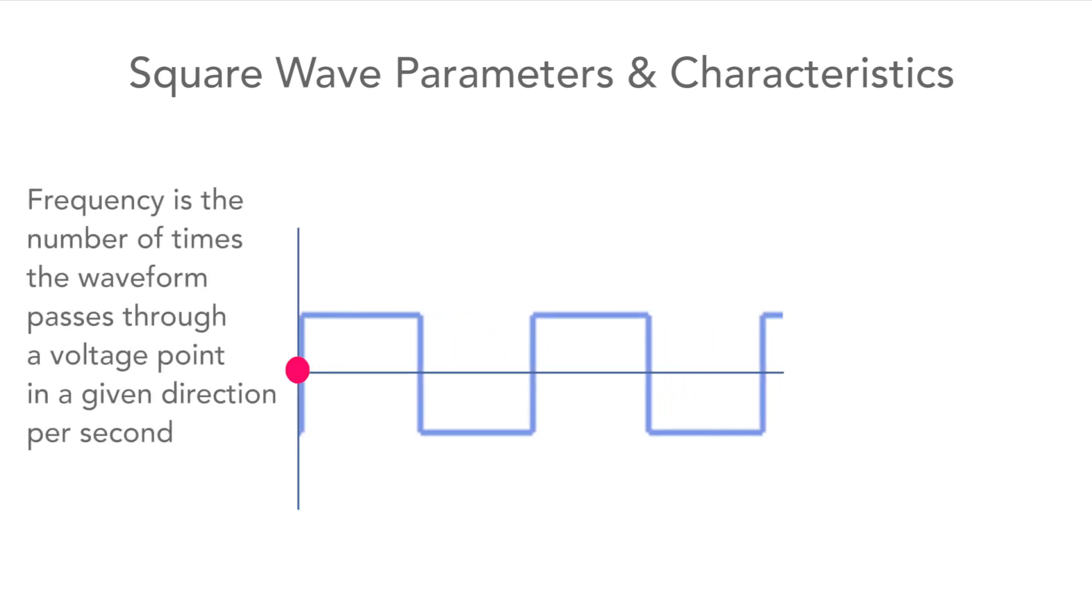And there's the frequency of the waveform. This is the number of cycles that occur in a second. So by counting the number of times the same point on a waveform occurs in a second, the frequency can be determined.